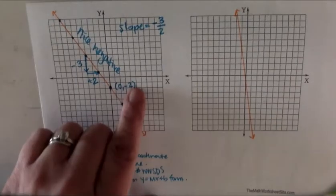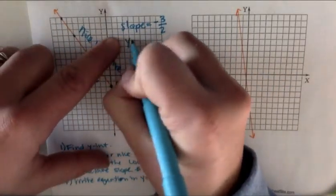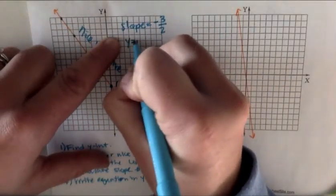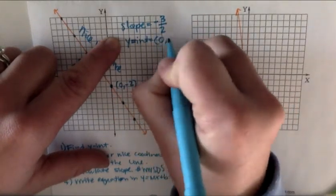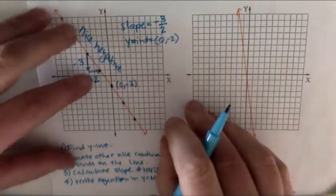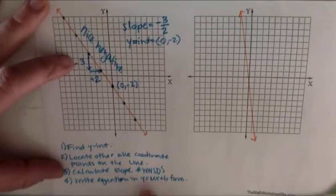We already know my y-intercept is 0, negative two. So now we can write our equation in slope-intercept form.